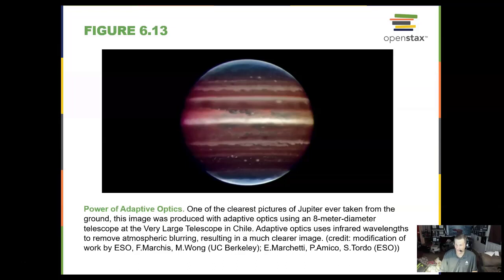Now, we can put pistons on the back of these telescope mirrors. These pistons can move the mirror ever so slightly to correct it for the atmosphere. That's called adaptive or active optics. Here is a picture of Jupiter with those active optics working, and you get a great image.